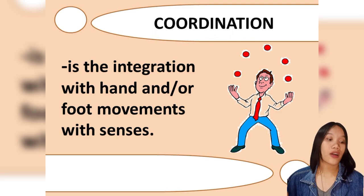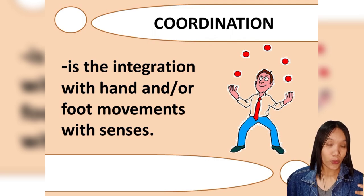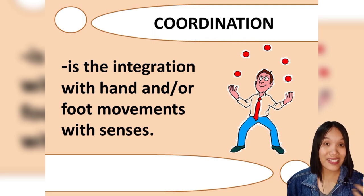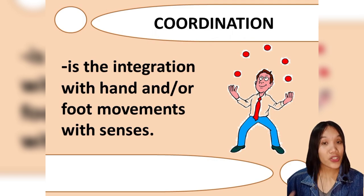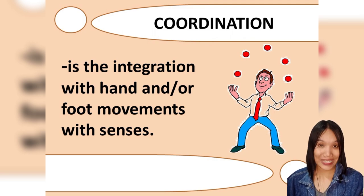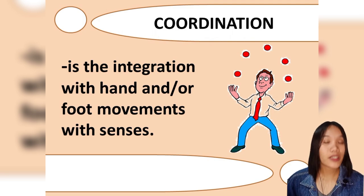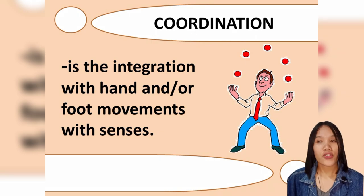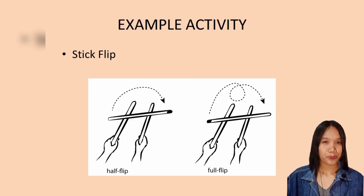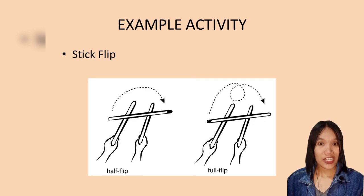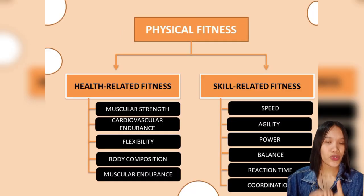Coordination is the integration of hand or foot movements with the senses — your senses work together with your hands and feet. An example activity for measuring coordination is juggling, such as paper juggling or the stick flip test.